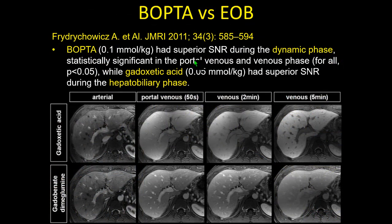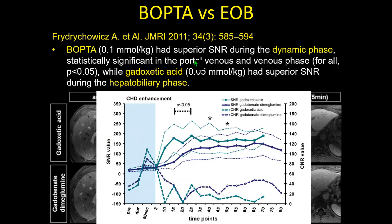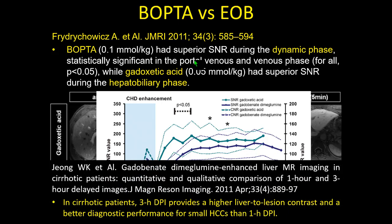Comparing the two agents: in the dynamic phase, Multihance — thanks to its higher relaxivity — provides better dynamic phase imaging. On the contrary, with EOB we have a better hepatobiliary phase, thanks to the 50% biliary elimination route. The hepatobiliary phase for Multihance should ideally be taken at two to three hours, as this is the best time window to appreciate liver enhancement — especially in cirrhotic patients.